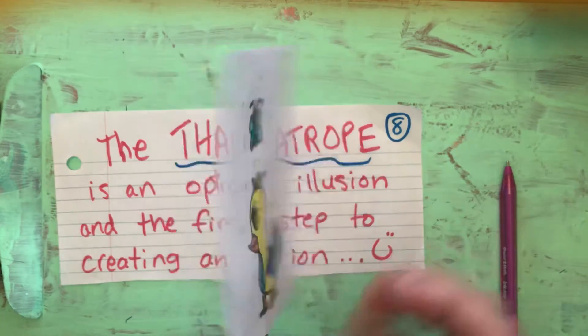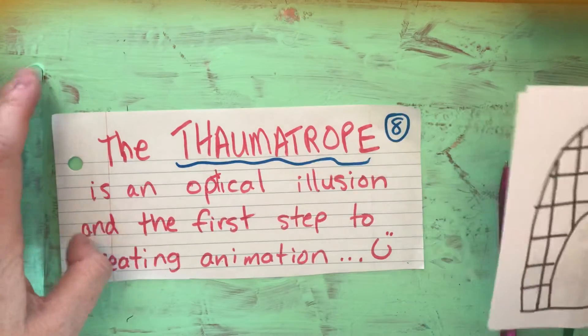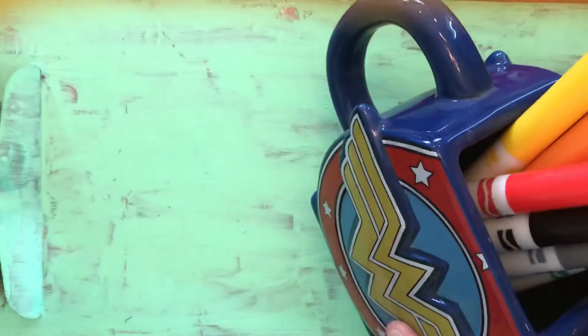It's having a hard time separating them, so what your brain sees is both those images together. So this is what we're going to make today. Now what you need to make a thaumatrope is markers, pencil crayons, or crayons.